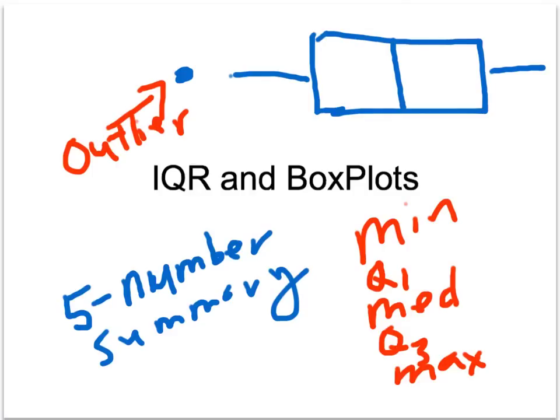The next thing we're going to look at is something called IQR, which is the interquartile range, and how it's related to box plots, and learn how to make those, and use those as a way to depict graphs, interpret graphs, and so on.